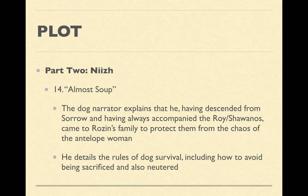We then return to the dog narrator, Almost Soup, who explains more about his background — he's descended from the dog Sorrow that was breastfed by Blue Prairie Woman after the disappearance of her child. He explains that he has always accompanied the Roy-Shawano clan, because this novel is the saga of one family — everybody is essentially related through this family. He came to Rosen's family to protect them from the chaos created by the presence of Sweetheart Calico.